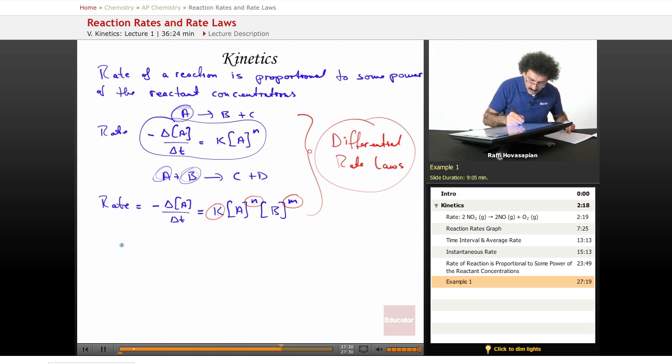Let's start with the reaction. 2N2O5 becomes 4NO2 plus O2.